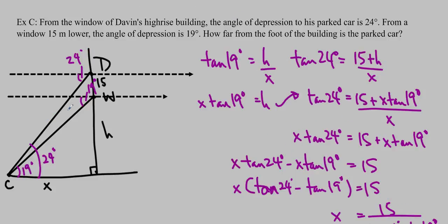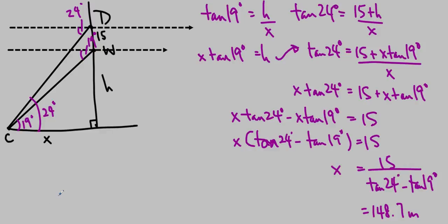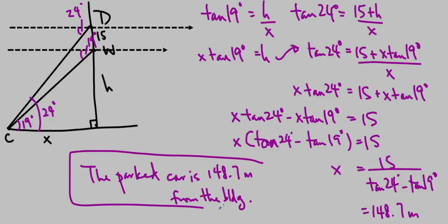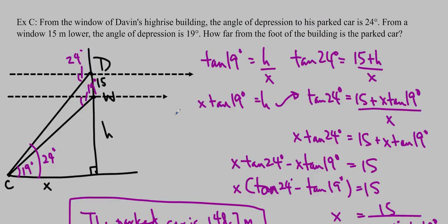So just double check how far from the foot of the building is the parked car. The parked car is 148.7 meters from the building. The end. So basically we are just using sine law, cosine law, and SOHCAHTOA. And in this case we just used SOHCAHTOA to find two equations and then substitute it in. So I hope you enjoyed it. I'll see you in class. See you soon.